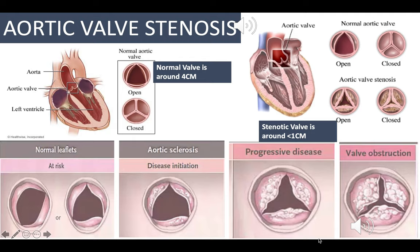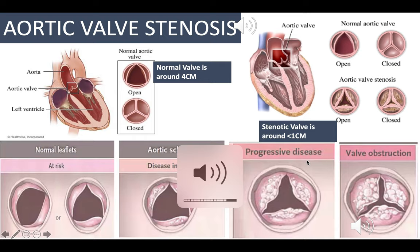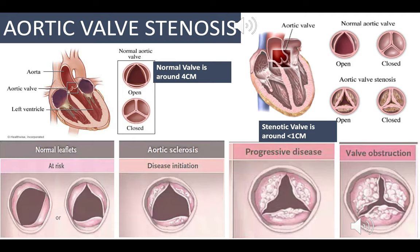In someone with aortic valve stenosis, the pressure across the valve is much greater because the valve does not open easily. When the pressure exceeds a certain threshold, it causes a click sound as the valve quickly opens, leading to a swoosh or murmur sound. This swoosh is typical of aortic valve stenosis and is best heard in the carotid region near the neck, as well as in the second intercostal space.